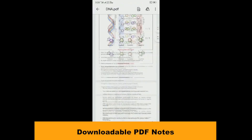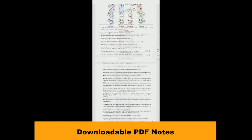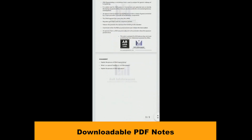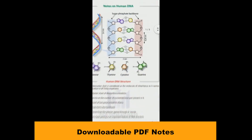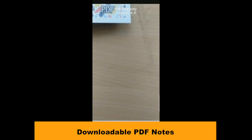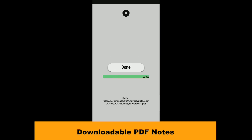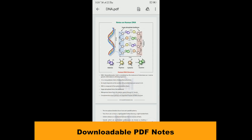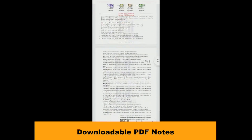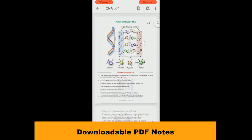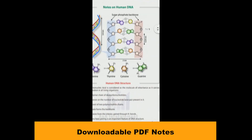Each augmented reality segment comes with a well-narrated voiceover that explains and describes the various parts and their functions. Specific notes for the units are also available through the download notes feature. By scanning the download notes section of the book, you will have access to a PDF file containing all pertinent notes to the unit. All these features are easily accessible by scanning the portions at the bottom of the pages.